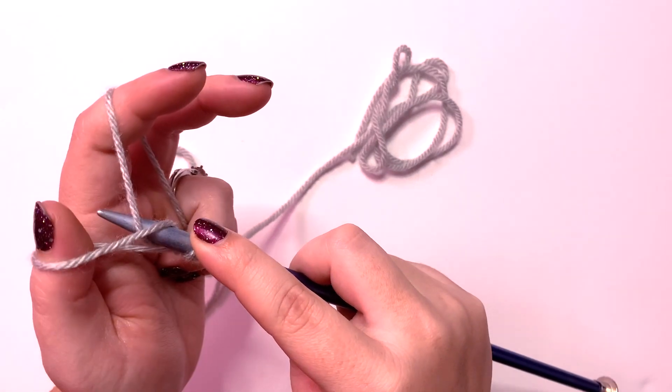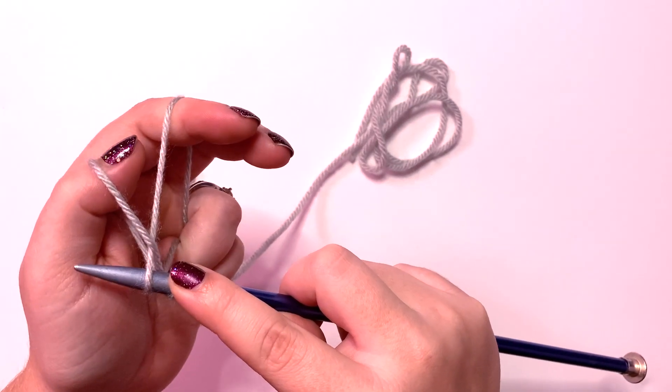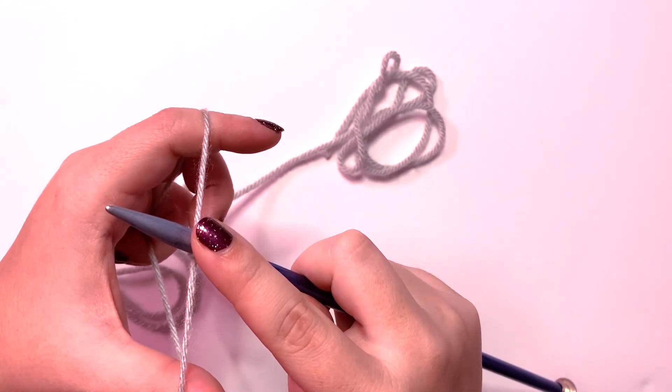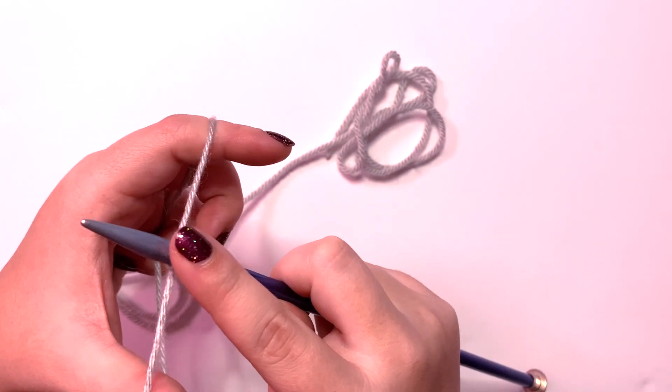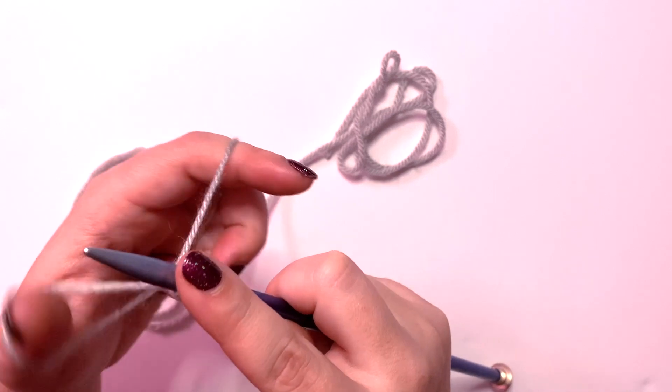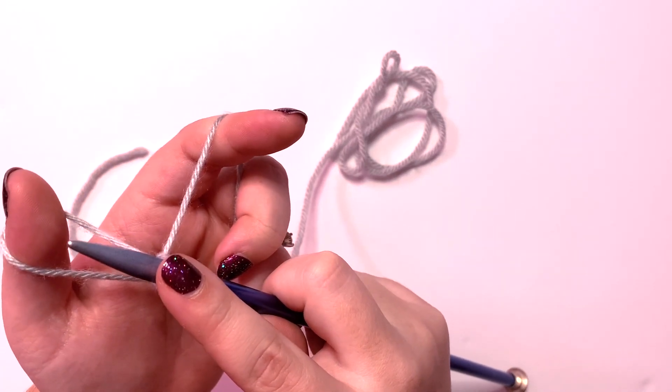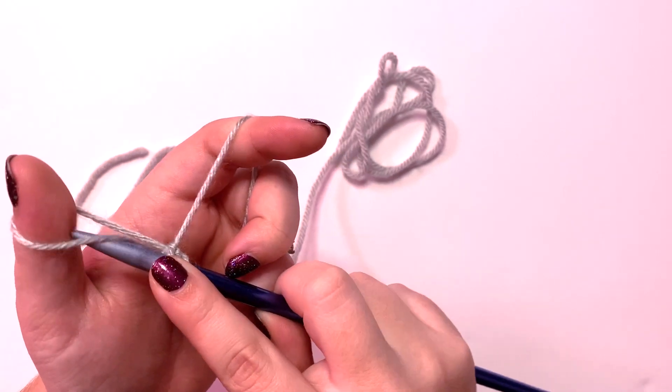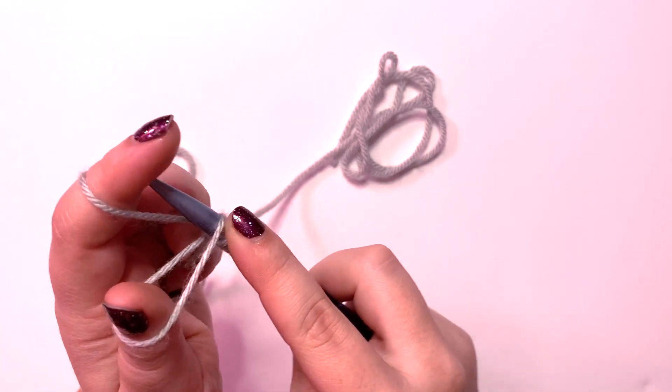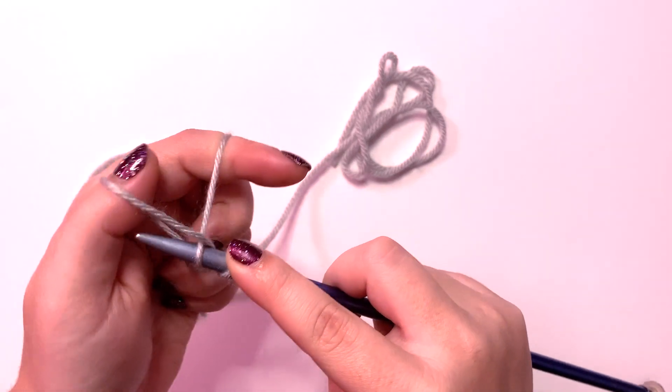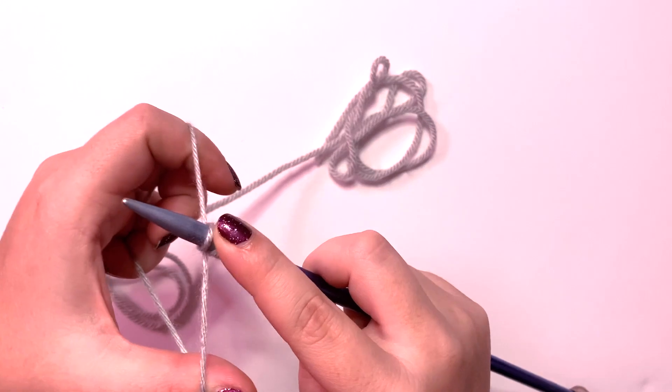Under the pointer and back through. As you get in a groove you won't have to actually drop the yarn. I'm just going to get back into that slingshot position, under my thumb, under my pointer, and pull it back through and just tighten it up.